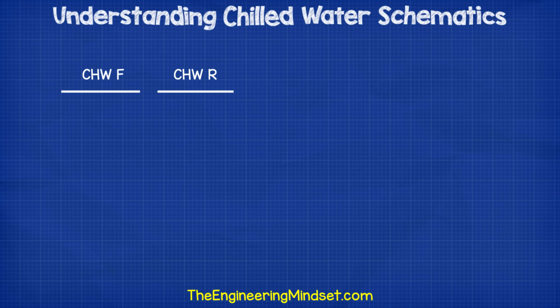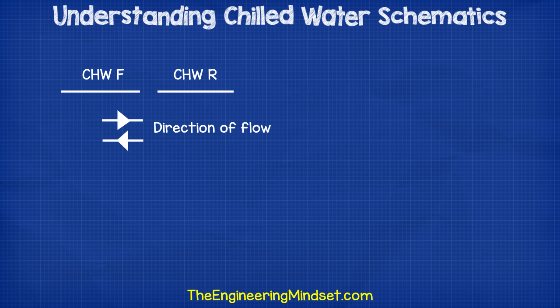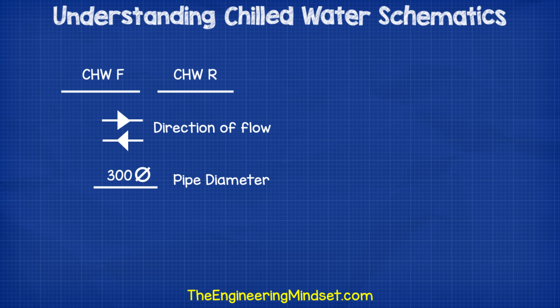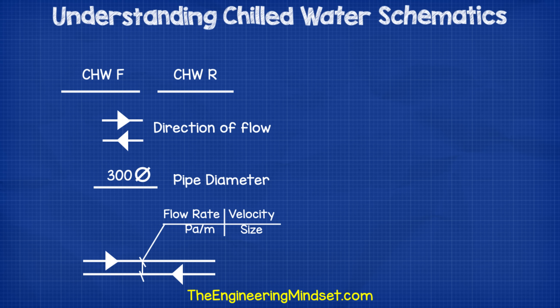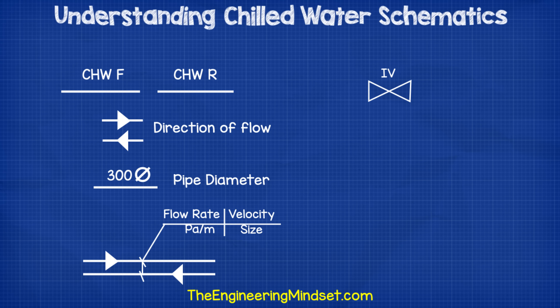Some important things to note about reading a schematic: the pipes will often have letters to help you identify which system it is, such as CHW or CND for chilled water and condenser water. They will also use F and R for flow and return. You can see the direction of the flow on the pipes just by these little arrows. The diameter of the pipe is sometimes listed next to the line. Newer designs might show you the designed flow rate, the velocity, the pressure, and also the pipe diameter. You'll also see letters around the valves to identify what type of fitting it is — for example, IV stands for isolating valve.